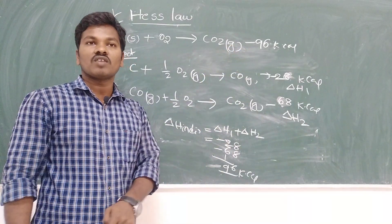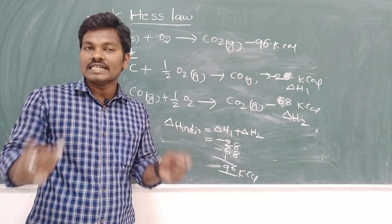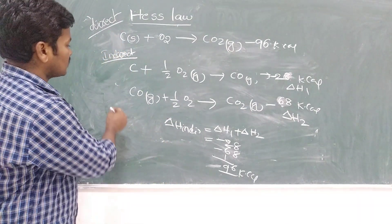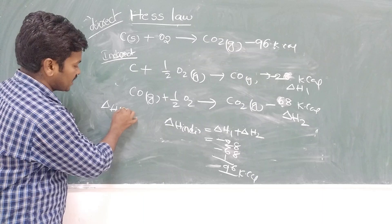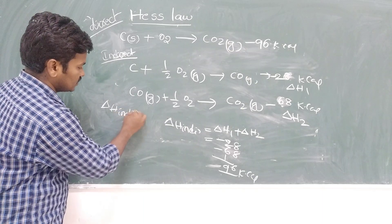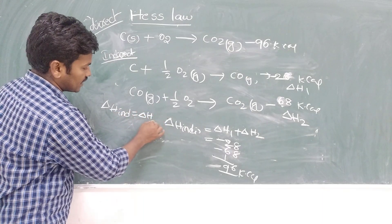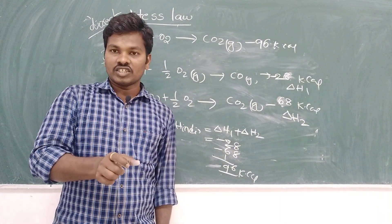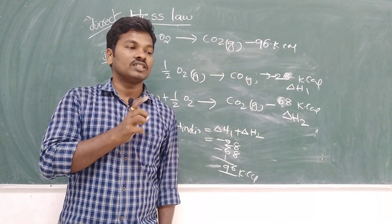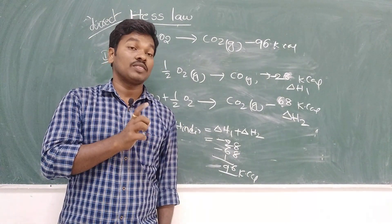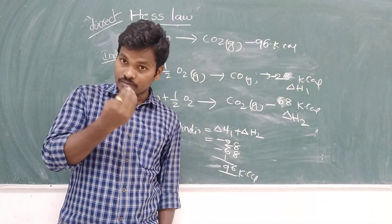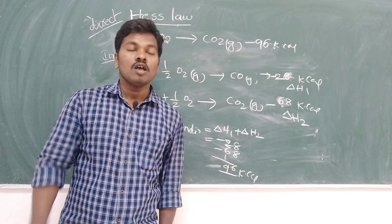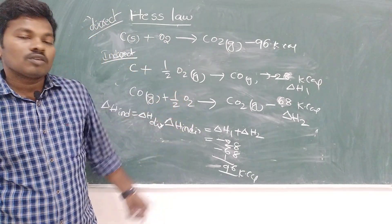Whether it is the direct method or the indirect method, the enthalpy change is always the same. This confirms that ΔH (indirect method) = ΔH (direct method). According to Hess's Law, the total enthalpy change is independent of the intermediate steps, whether the reaction takes place by direct or indirect method.